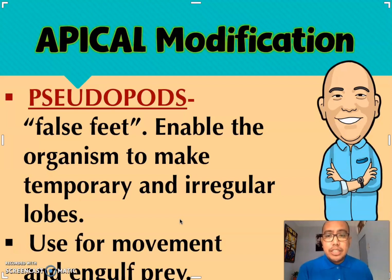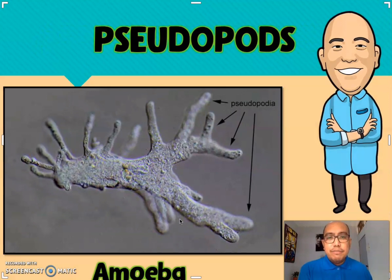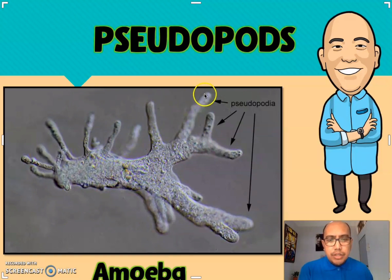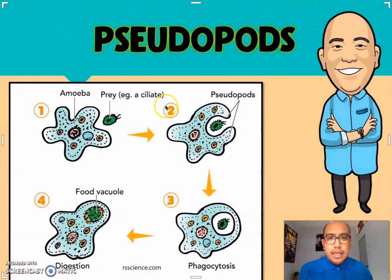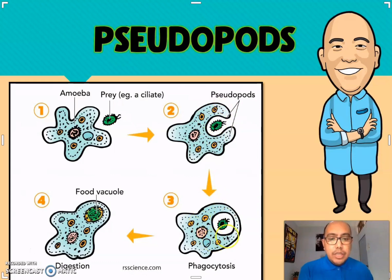The last type of apical modification is the pseudopods, also known as false feet. They enable the organism to make temporary and irregular extensions, which they use for movement and to engulf prey. The best example of an organism with pseudopods is the amoeba. In the process called phagocytosis, the prey is engulfed inside the amoeba and stored in the food vacuole.